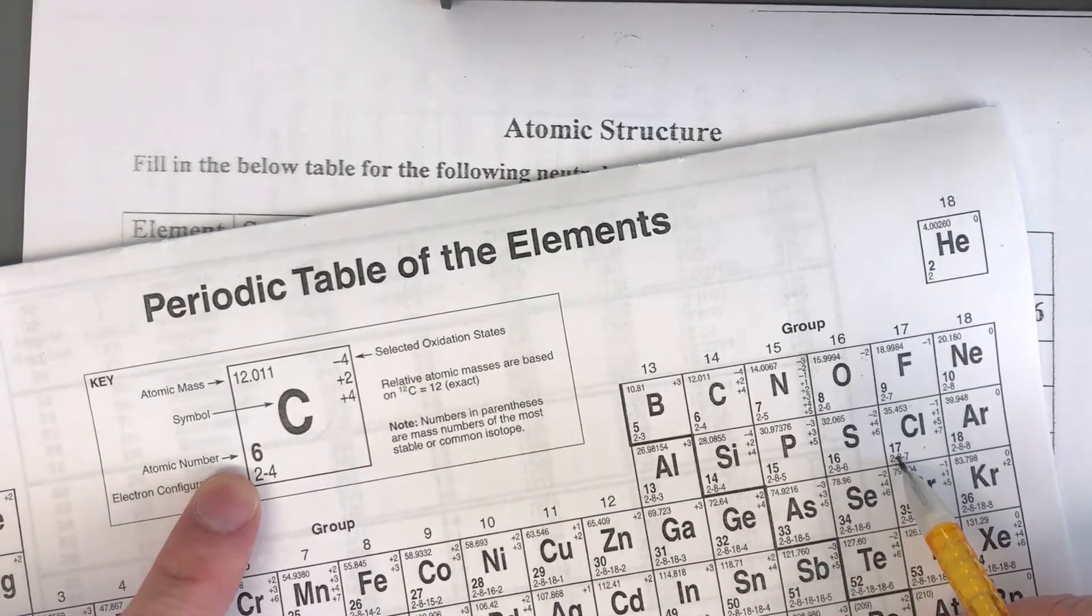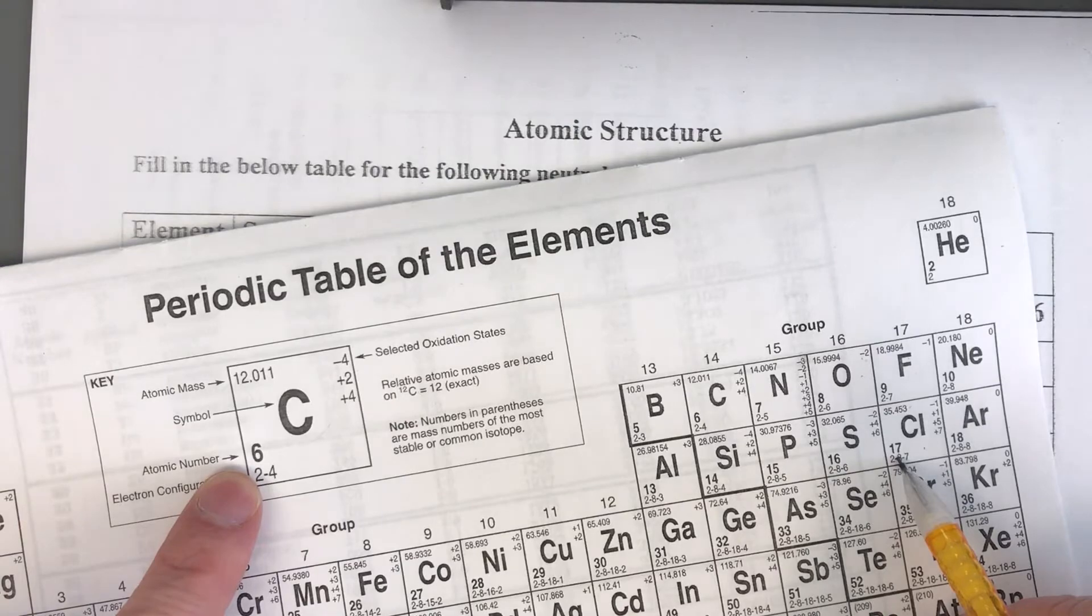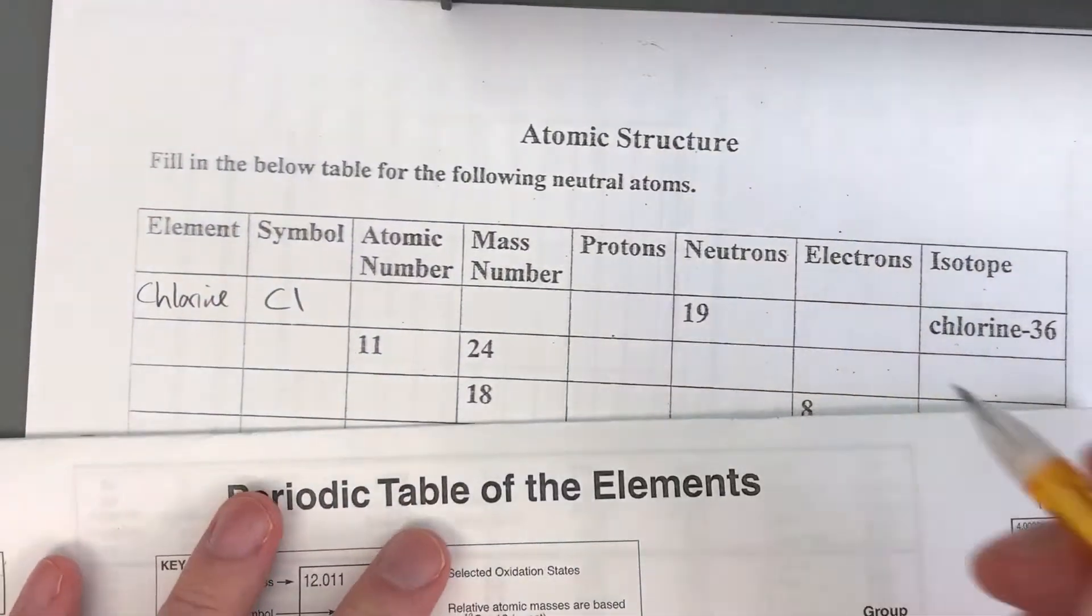Remember the atomic number right here for our key for this specific periodic table is over here in the bottom left, the bold number. So it's atomic number 17.